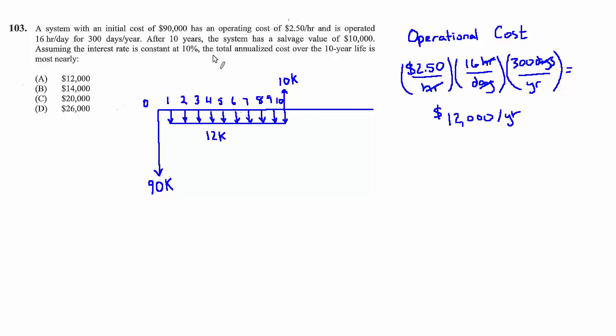Now their question is what's the annualized cost over the 10-year life. What they're really asking is if you take the overall situation—the fact that there's an upfront cost and there's a salvage value and there's this annual operating cost—and you just work it out so that it appears as an annual cash flow out.